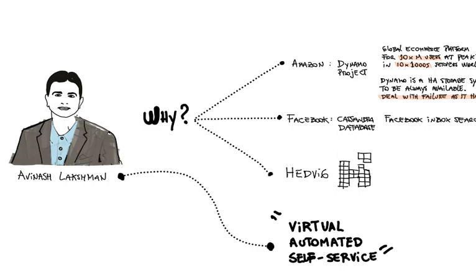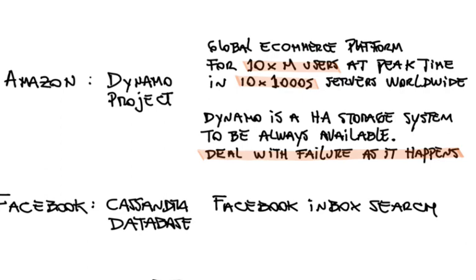Avinash worked at Amazon and he had to deal with this problem of storage availability in tens of thousands of servers with millions of transactions for the shopping carts. So he had to design a system to make storage available, resilient, running on cheap commodity hardware. And this was the Dynamo project.